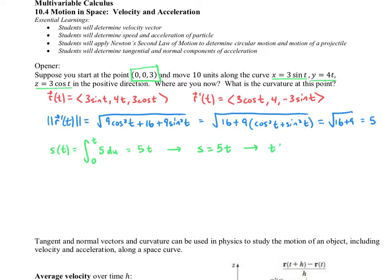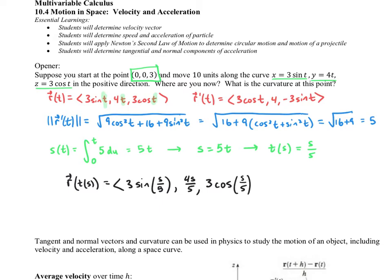If we want to make this a function of arc length, we simply divide by 5, so T equals S over 5. That's how we change our parameter. Instead of r of T, we have r of T of S, and we substitute S over 5 in for all T values: <3 sine of S/5, 4 times S/5, 3 cosine of S/5>. We've changed the parameter so it's now based on arc length.